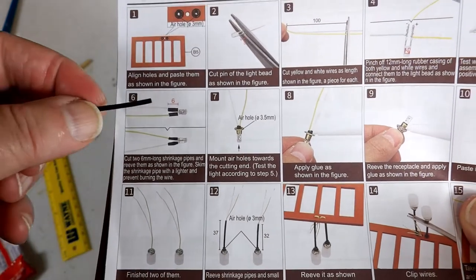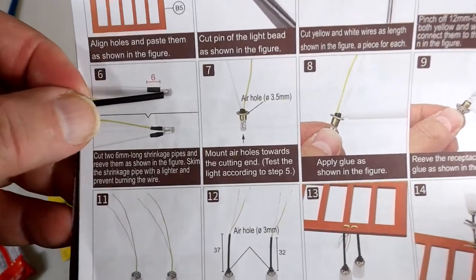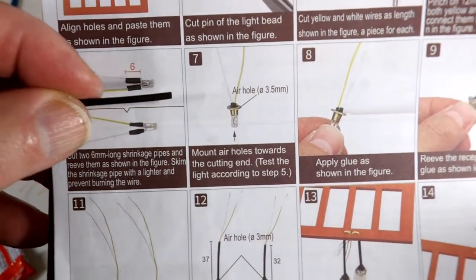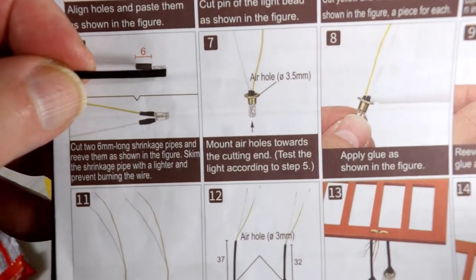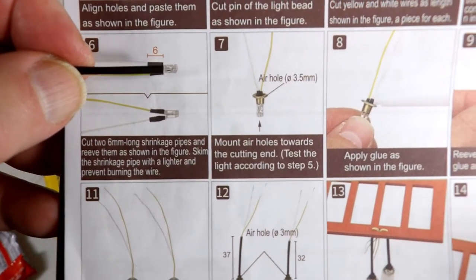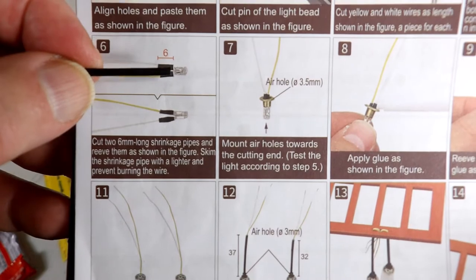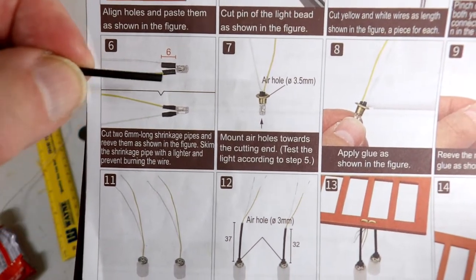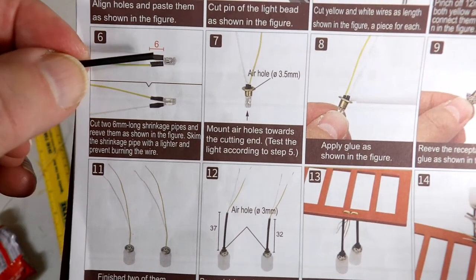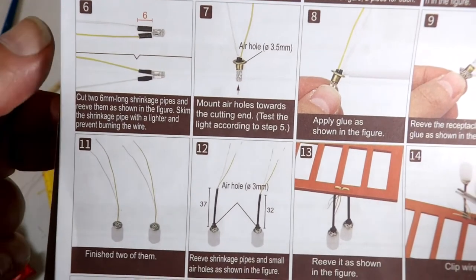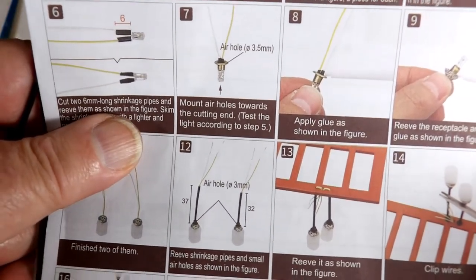So the next step we have is to cut six millimeter portions out of this and fit over the wires like that. So that will be the next thing we do.